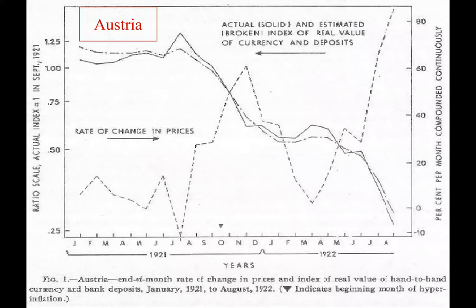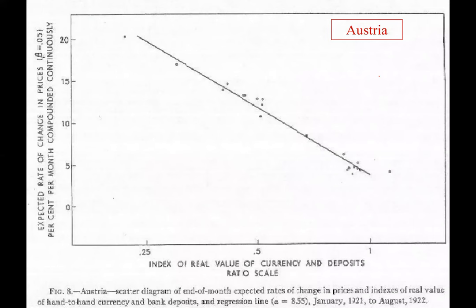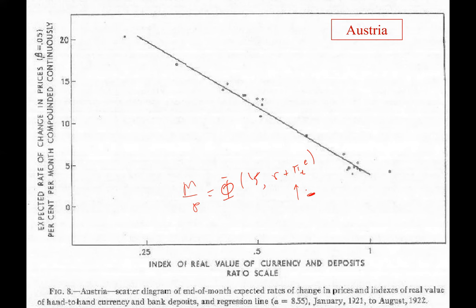Austria shows essentially the same story: that is the fit Cagan got for Austria. These data are the motivator and foundation of the demand function for money we'll use throughout our theory: M/P = phi(Y, R + π_te). We'll focus on periods where Y is basically constant, so it's all about π_te. When π_te increases, the demand for money goes down — that's what the negative sign means.